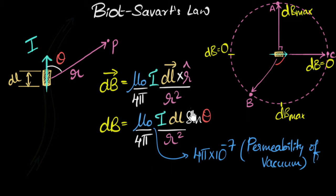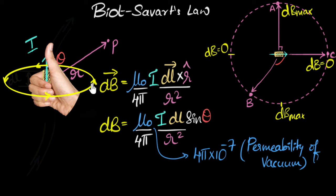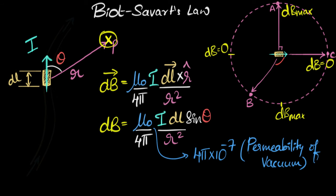Let's look at the direction of the magnetic field. To find it, we can use the right-hand clasp rule: take your right hand and clasp the conductor so your thumb points in the direction of the current, then the encircling fingers give you the direction of the magnetic field. Using this, everywhere to the right the magnetic field is into the screen, so the magnetic field at point P is into the screen. Everywhere to the left it would be out of the screen.